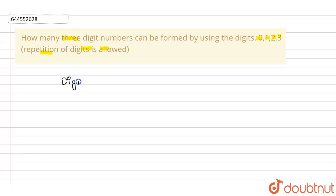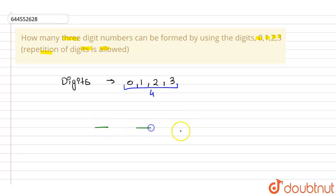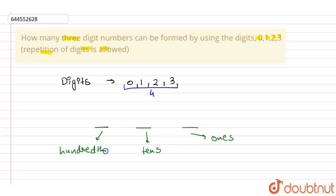The digits given to us are 0, 1, 2 and 3 — that means there are four digits in total. In a three-digit number there are three places: the ones place, the tens place, and the hundreds place.